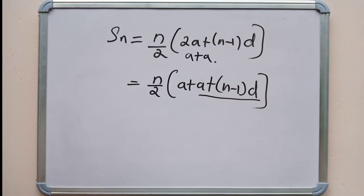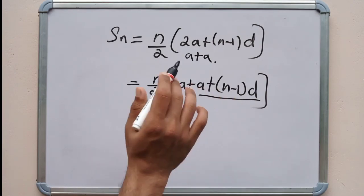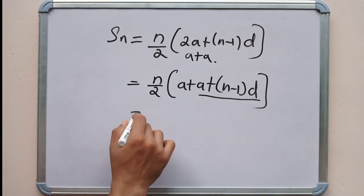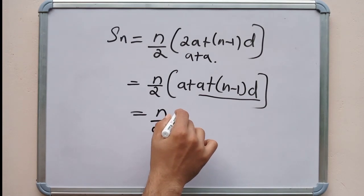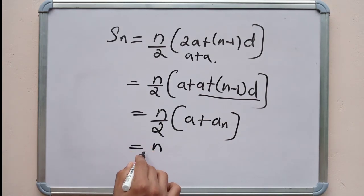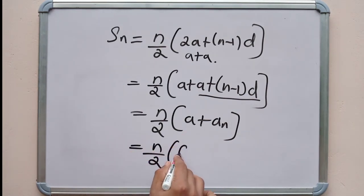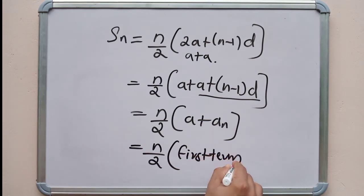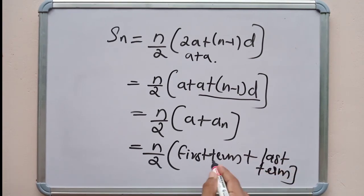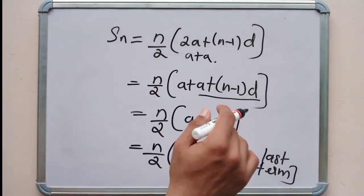A plus (N minus 1) into D is the last term. So rewriting, Sn equals N by 2 into (2A plus (N minus 1) into D). We can also write 2A as A plus A, and since A plus (N minus 1) into D is the last term, this becomes the first term plus the last term.